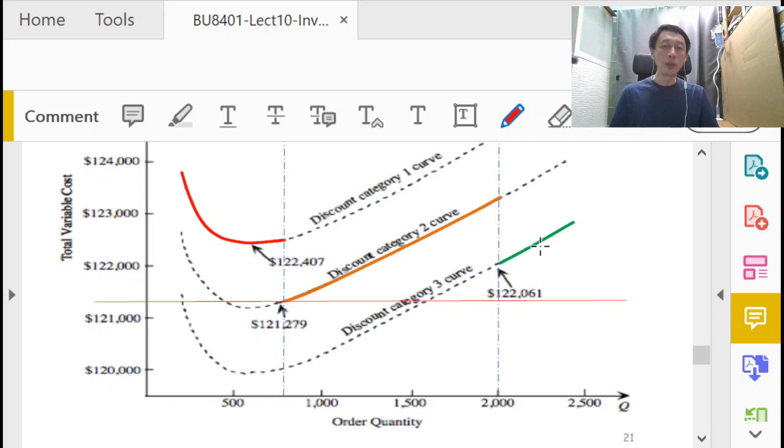The when to order part will follow the EOQ model, where we use the watermark, the reorder point watermark, as an event trigger, such that the first time our inventory level drops below the reorder point, it will trigger our reorder activity. That concludes the discussion for this EOQ discount model.